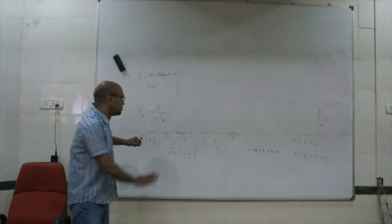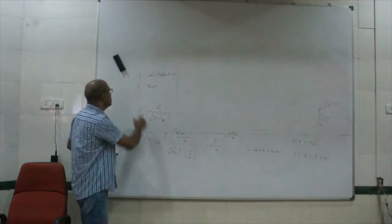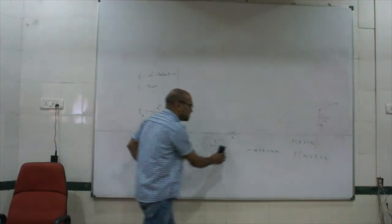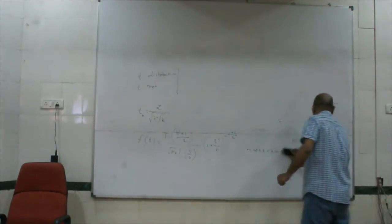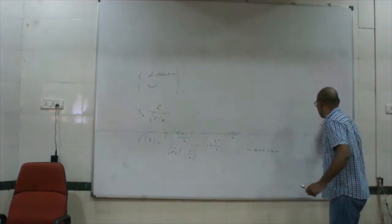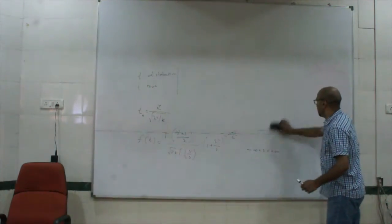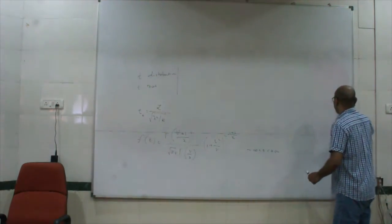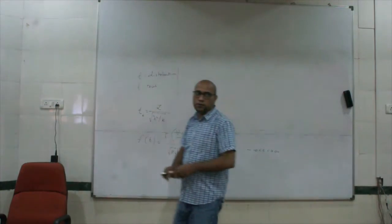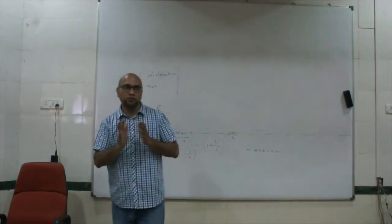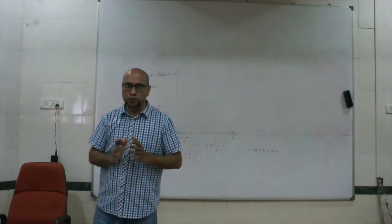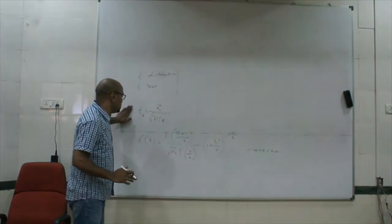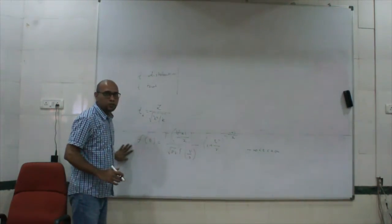Once this idea is understood, we move ahead and try to understand a next idea. This idea is associated with sampling distribution. So this is the t random variable, this is the t distribution function. The next thing is the sampling distribution of the mean.